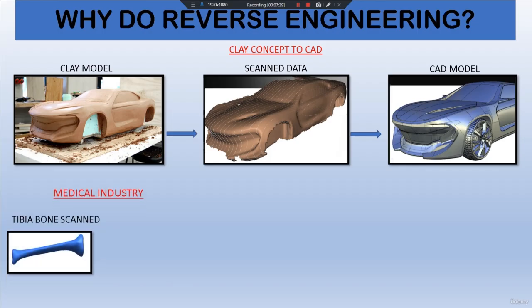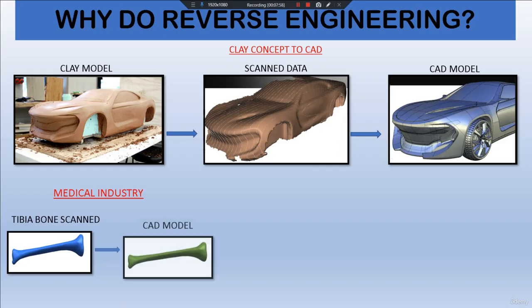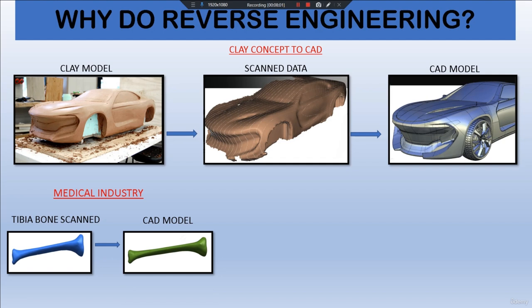Reverse engineering is also used in the medical industry. For example, it can be used to fabricate a bone. We scan the bone, perform operations using CAD tools to make it a CAD model, and then fabricate the bone using 3D printing with a material like calcium phosphate. We can also edit the parameters of the bone as required using the CAD software itself.